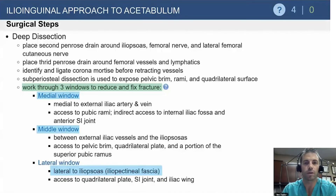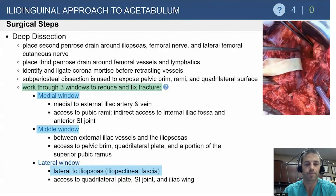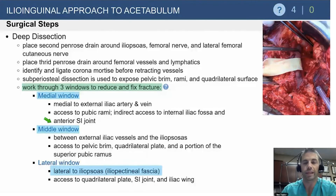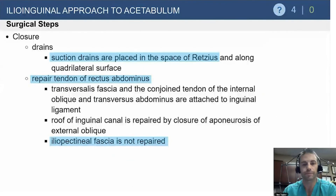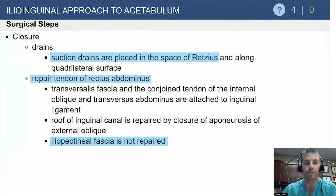Working through the three windows gives access to the pelvic brim, rami, quadrilateral surface, and laterally into the ilium itself — all from the anterior aspect. A penrose drain around the vessels is common in larger approaches like the ilioinguinal. Drains can be placed as with any approach. The rectus is repaired at closure but the iliopectineal fascia — which you had to cut — is not repaired. The inguinal canal is repaired but not over-tightened to avoid strangulating structures.